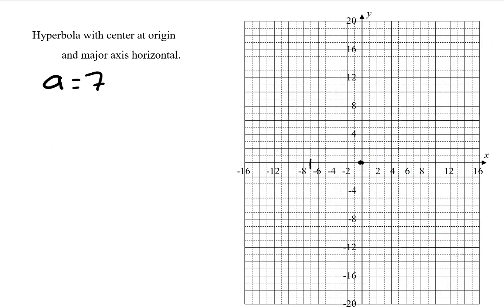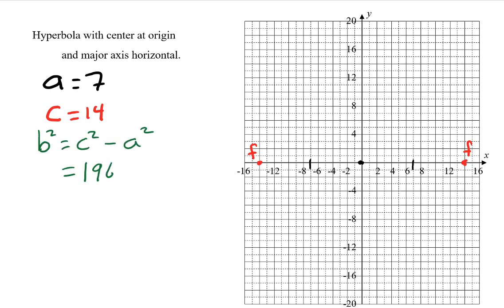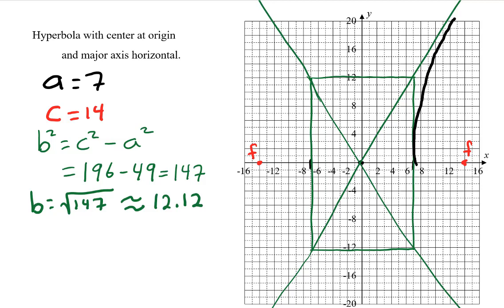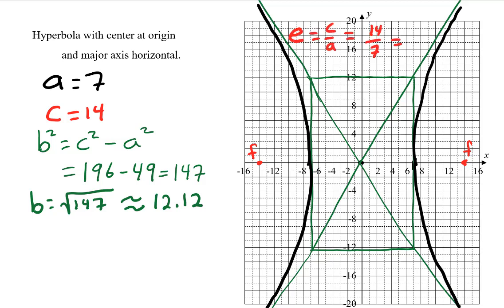In the last example, a remains 7, but c is now 14. The foci are 14 spaces to the left and right of the center. b squared is c squared minus a squared, giving us 196 minus 49, which is 147. b is the square root of 147, approximately 12.12. The top and bottom of the central rectangle are 12.12 spaces above and below the origin. We draw lines through the corners to get the asymptotes, and each branch approaches the asymptotes. The eccentricity is 14 over 7, or 2.